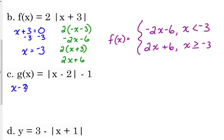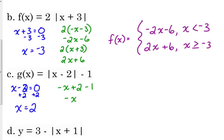For example c, the absolute value of x minus 2, minus 1: set x minus 2 equal to 0, so the function changes at x equals positive 2. Changing the signs inside gives negative x plus 2; since the minus 1 is outside the bars, we just append it, giving negative x plus 2 minus 1, which simplifies to negative x plus 1. For the second piece, we drop the bars and combine like terms: x minus 2 minus 1 gives x minus 3.